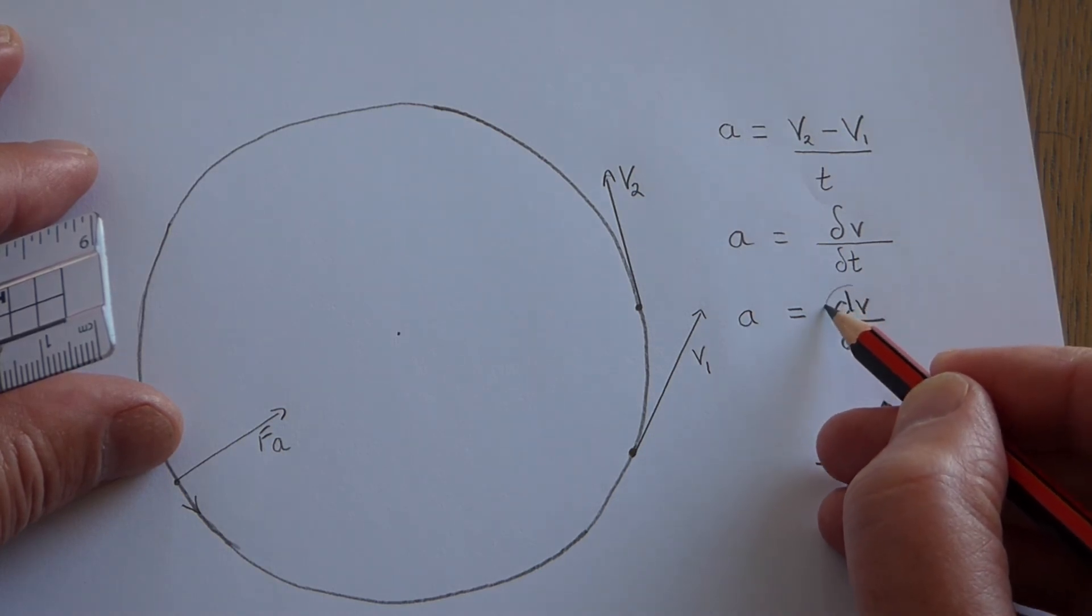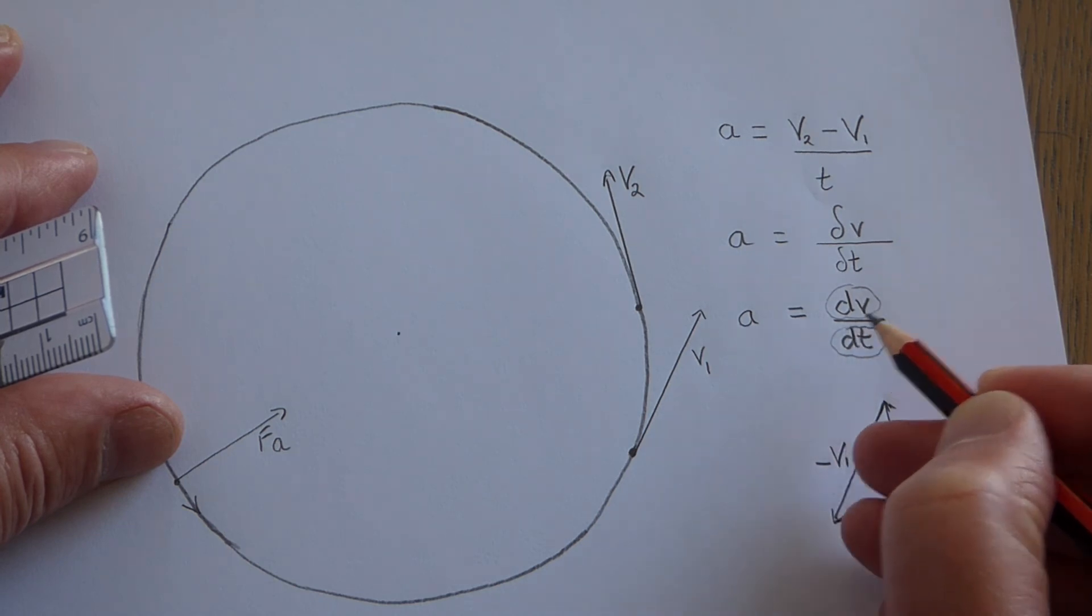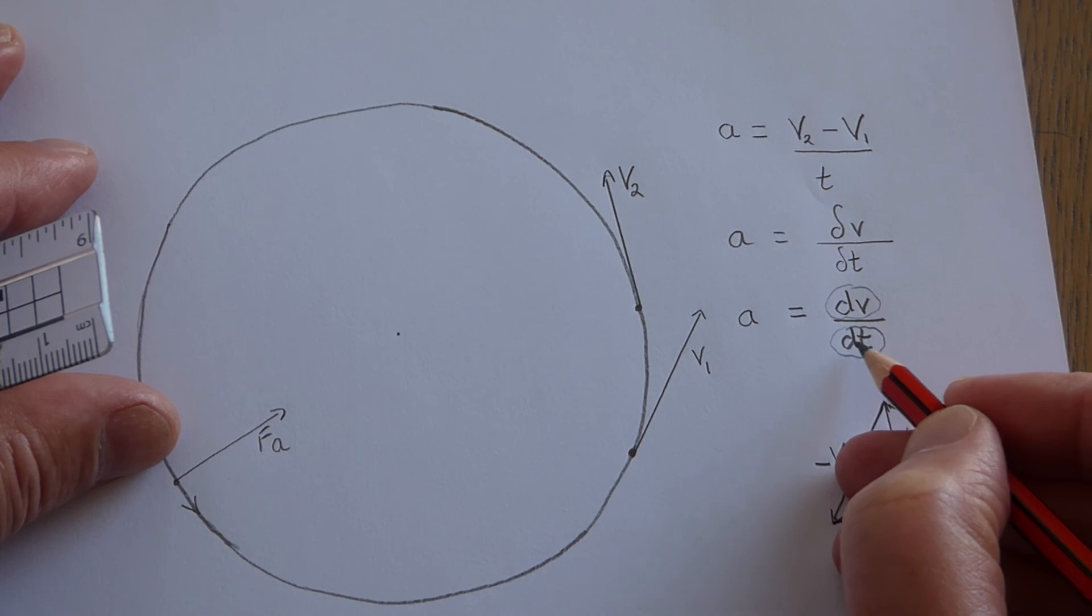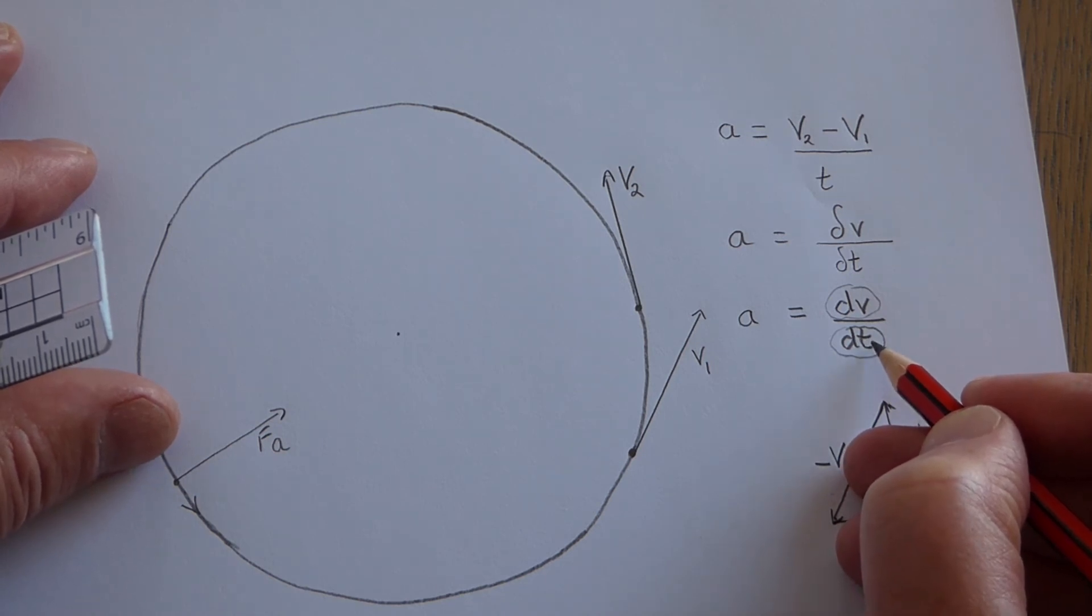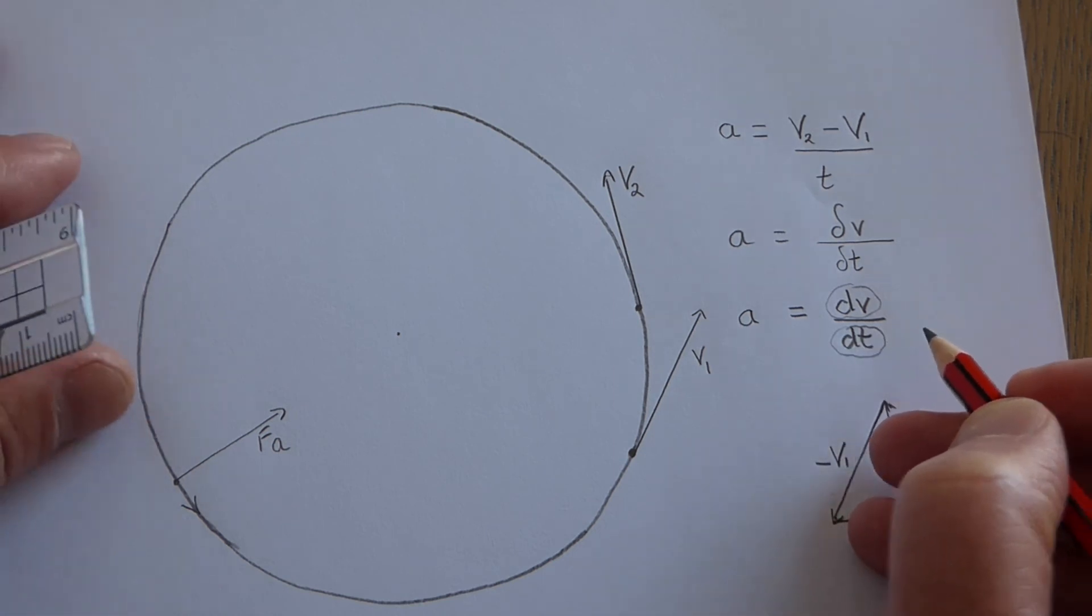Of course, it's worth saying that a change in velocity or time which is infinitely small actually doesn't exist. If I told you how long an infinitely small length of time is, you could say, 'couldn't you cut that in half?' And of course you could. So these are imaginary quantities, but nevertheless the mathematics works.